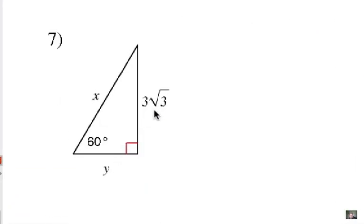Alright, notice that the longer leg is given 3 radical 3. And the Y is the shorter leg, so that must just be 3. Because remember, the long leg is radical 3 times longer than the short leg. Once we know the short leg, we can double it to get the hypotenuse of 6.